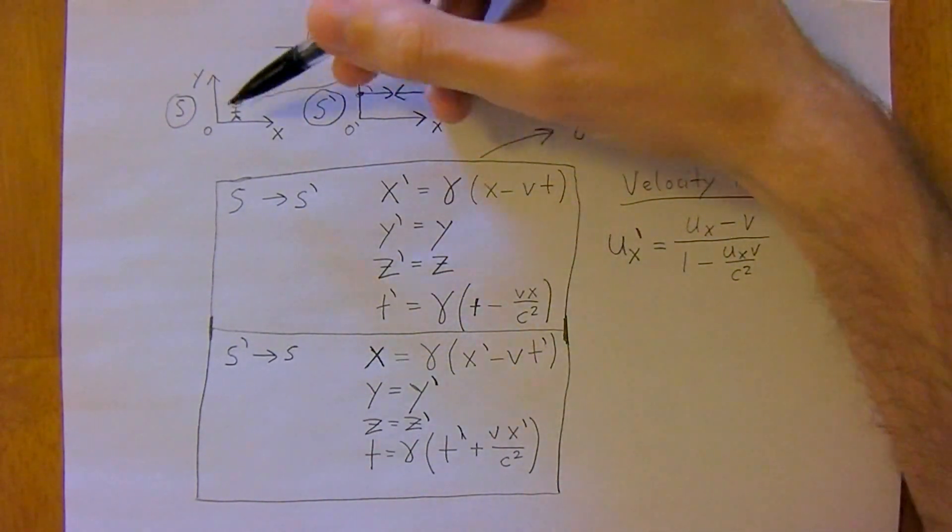So you observe from earth that V is traveling at some percent of the speed of light, and you observe from earth another speed which is UX. UX is going to be traveling left, and you observe these top two terms here. Where this third velocity comes in, well this is going to be the velocity of UX with respect to V.